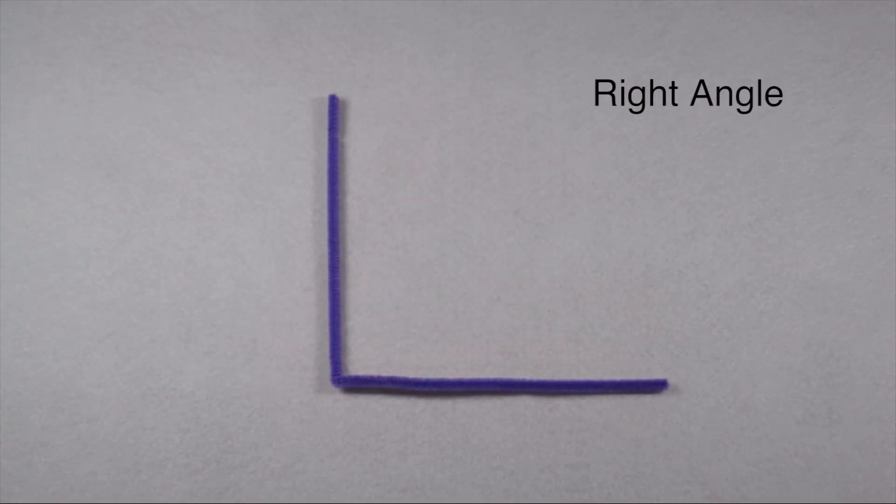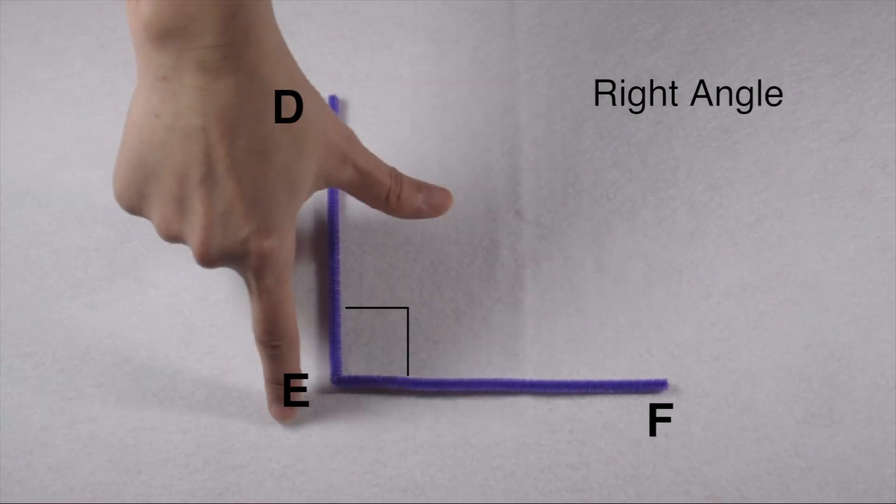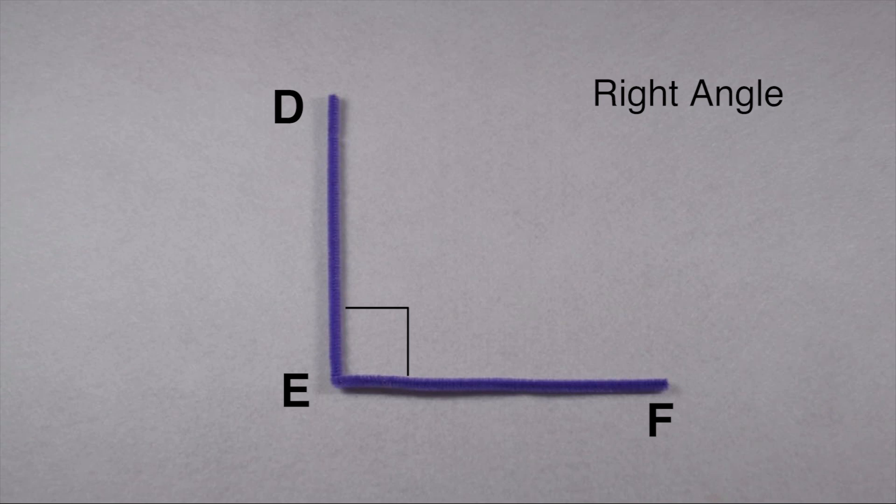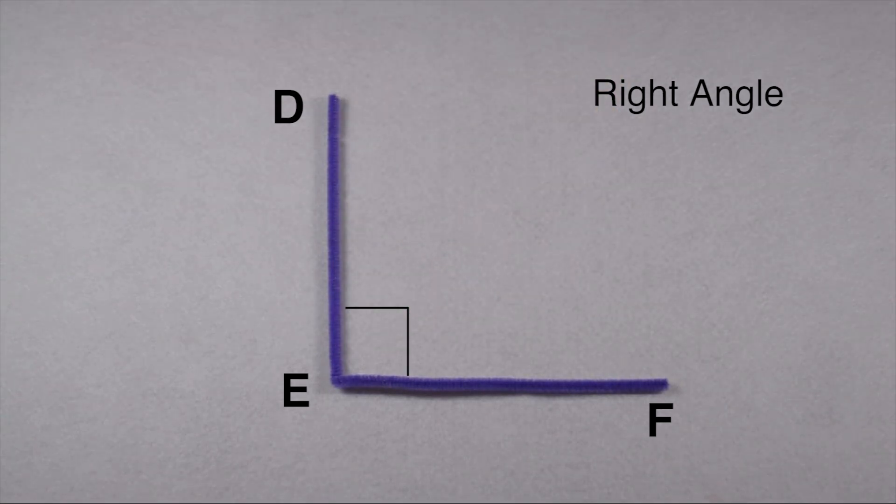When thinking about angles, most of us picture a right angle. A right angle, like angle D, E, F, is a 90 degree angle. Usually, you can tell it's a right angle by the box it's labeled with in the corner. All right angles will always measure 90 degrees.